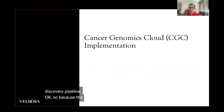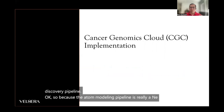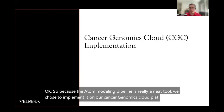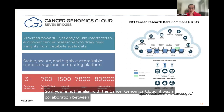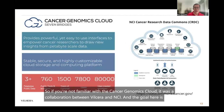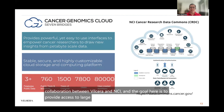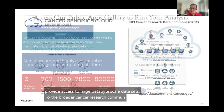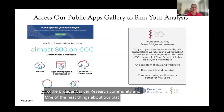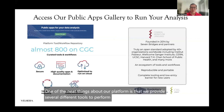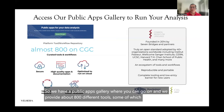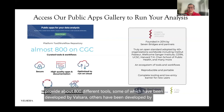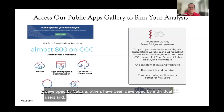Because the ADAM modeling pipeline is a really neat tool, we chose to implement it on our Cancer Genomics Cloud platform, or the CGC. The Cancer Genomics Cloud was a collaboration between Valsera and NCI. The goal is to provide access to large petabyte-scale datasets to the broader cancer research community. One of the neat things about our platform is that we provide several different tools to perform analysis on these large datasets. We have a public apps gallery with about 800 different tools, some developed by Valsera and others by individual users. The backbone of all these tools is the Common Workflow Language to enable reproducibility and portability across systems.